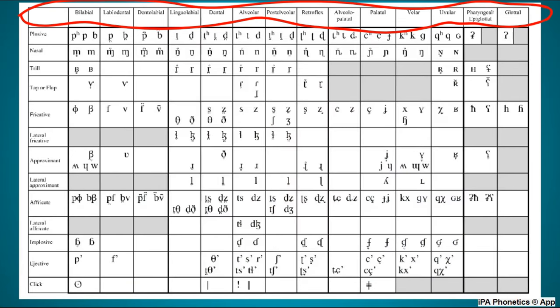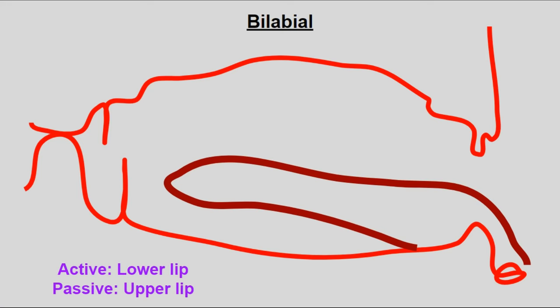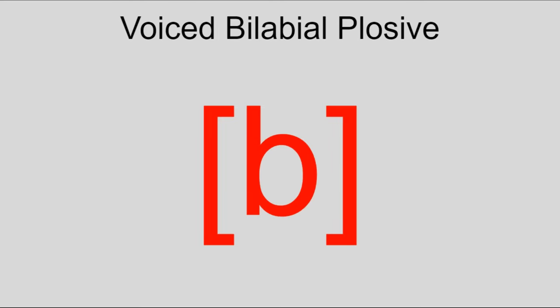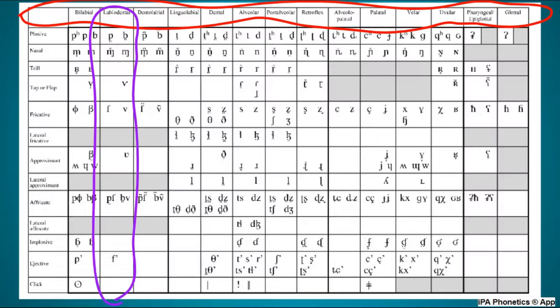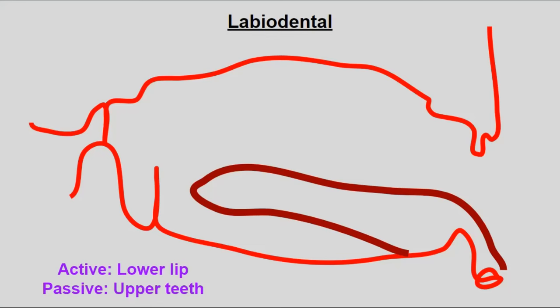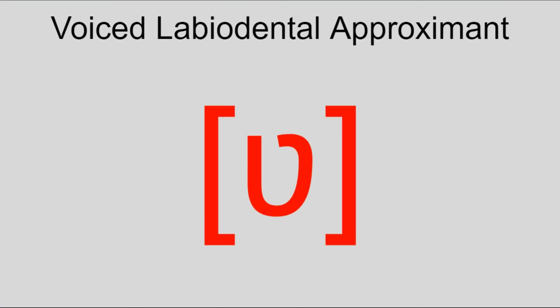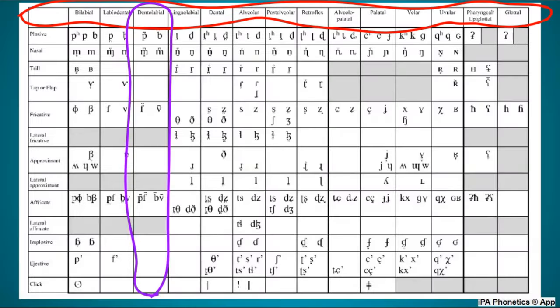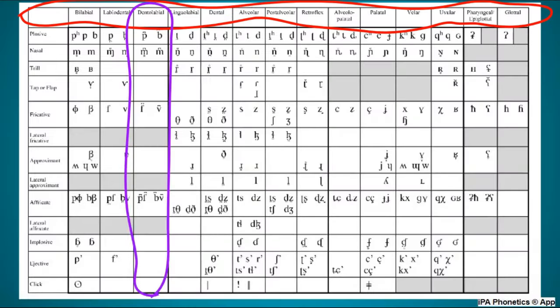Starting from the front, we have bilabial — made with both lips — with examples M, B, and P. After that is labiodental, which involves the lower lip and upper teeth. The most common sounds of this variety are F, V, and the labiodental approximant.